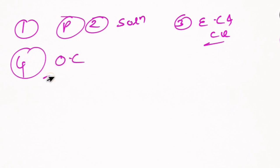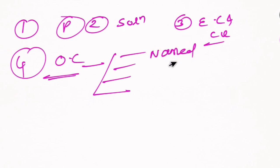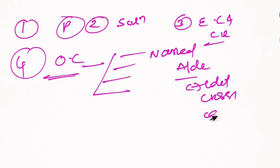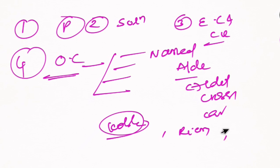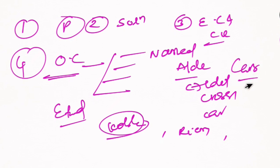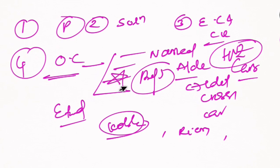For MPC and BiPC students, organic chemistry has four probabilities. Important reactions include HVZ reactions. For maximum marks, you should know preparation, properties, and name reactions. If you study these, you will get 8 marks from organic chemistry.